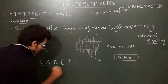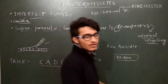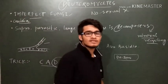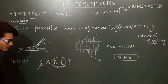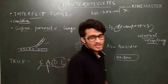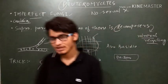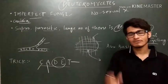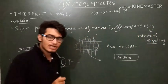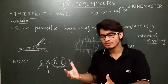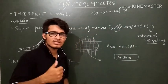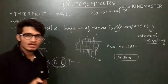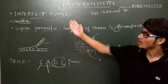Now the important thing is the examples. We have a trick for the examples of Deuteromycetes too. Deuteromycetes starts with 'DE', and the three examples given in the book are Colletotrichum, Alternaria, and Trichoderma. You can easily memorize all of them with the simple trick word 'CADET' — where DE means Deuteromycetes, C stands for Colletotrichum, A for Alternaria, and T for Trichoderma. This trick helps you recognize which class these examples belong to.